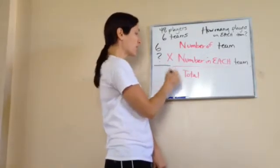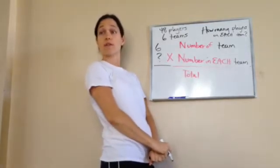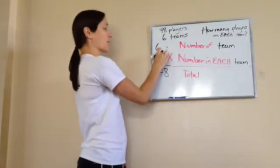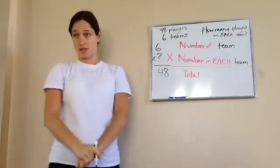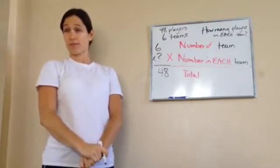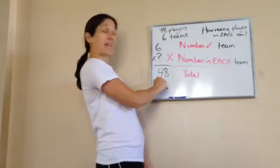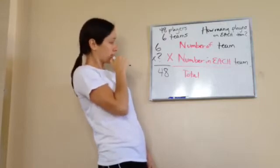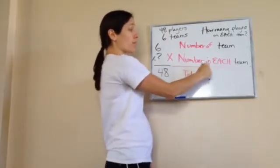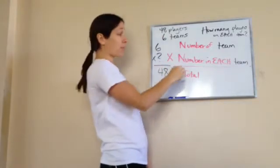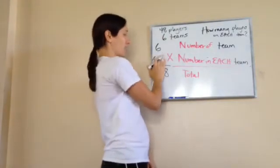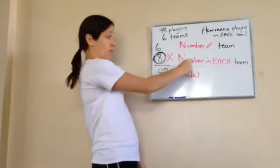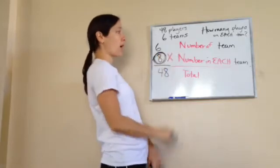Do we know the total number of players? 48. So do you see my problem this time? Six times what equals 48? Do you know what six times what equals 48? The answer is eight. So the number in each team — how many players were in each team? Eight. We got our answer. The answer they were looking for was the middle number — the number in each group. The answer to this problem is eight.